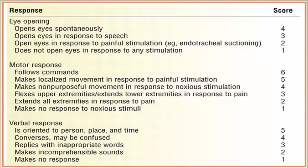Today we're going to be doing a viewer request, and if you look at the screen, you'd probably guess that we've been requested to cover the Glasgow Coma Scale, a universal neurological scale for assessing a patient's current state of consciousness. This is the way it's usually presented to students: three different categories with an associated point value for each. You may look at this and think it looks like a lot to remember — we're going to show you that's not the case at all. We're going to break it down in a way that is really simple and, best of all, ridiculously easy to remember.